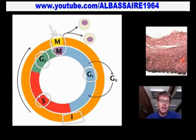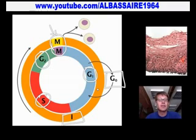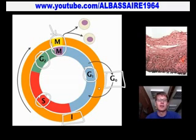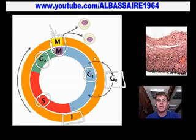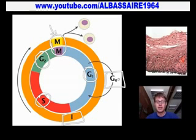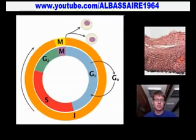If a cell never divides again, it'll actually stall out in something called the G0 phase. We've got cells inside our body — like cells of the central nervous system or muscle cells — that never copy themselves during your whole lifetime. They're in what's called the G0 phase, just waiting, and they're not going to make divisions.